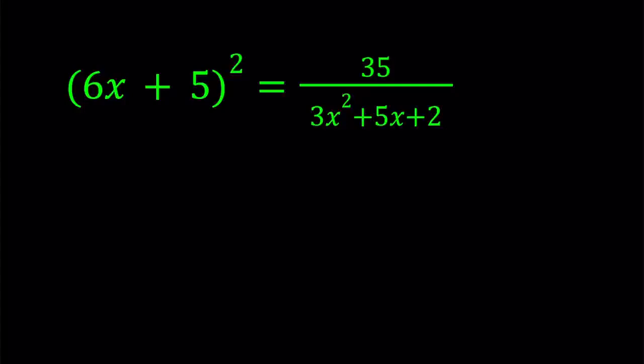Hello everyone. In this video we're going to be solving a rational equation. We have 6x plus 5 quantity squared equals 35 divided by 3x squared plus 5x plus 2.